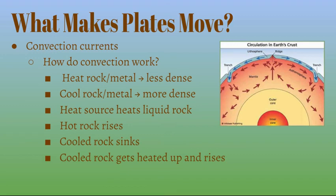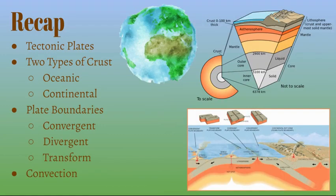So we learned about tectonic plates, the two types of crust — oceanic and continental — the three types of plate boundaries — convergent, divergent, and transform — and we learned about convection. Thanks for watching; this was a short one, but hope you stay safe.